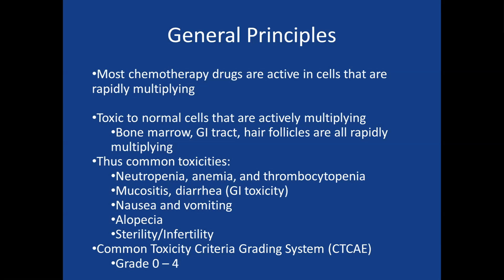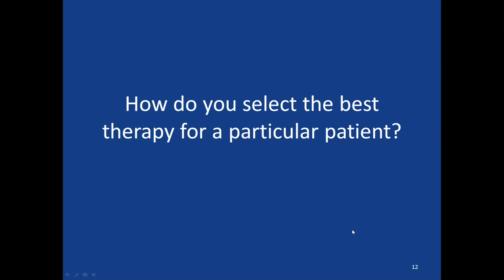Normal rapidly dividing cells — hair follicles, GI tract — explain why you can have diarrhea or sloughing of your mucosa in your mouth, as well as bone marrow effects on red blood cells, white blood cells, and platelets. Common toxicities of old-school IV chemotherapies include myelosuppression, GI toxicities like mucositis or diarrhea, nausea, and particularly in young cancer patients, sterility and infertility by affecting sperm count or ovarian function.